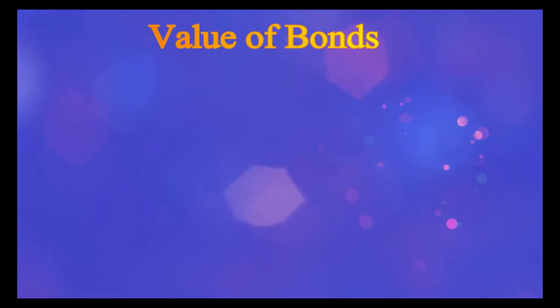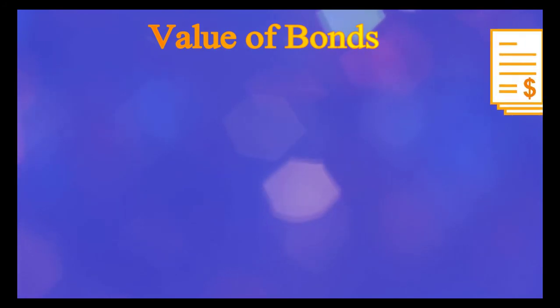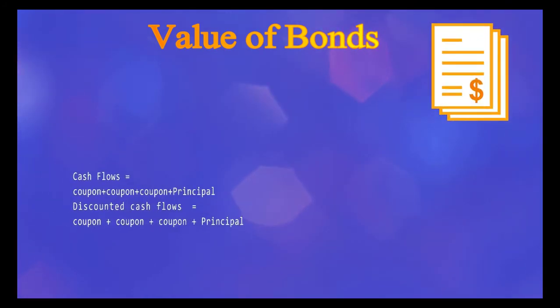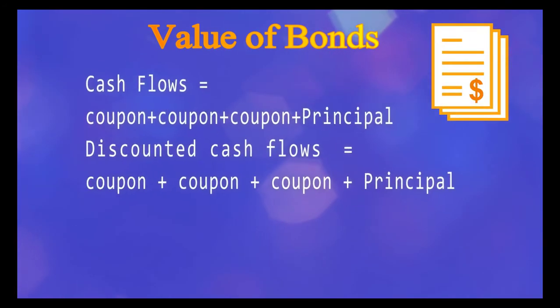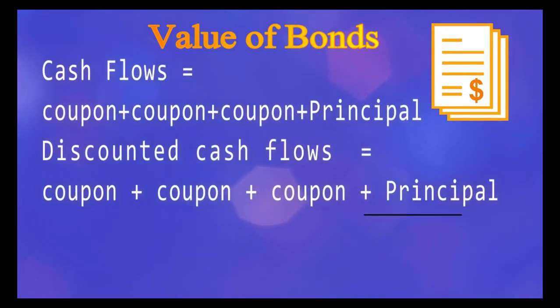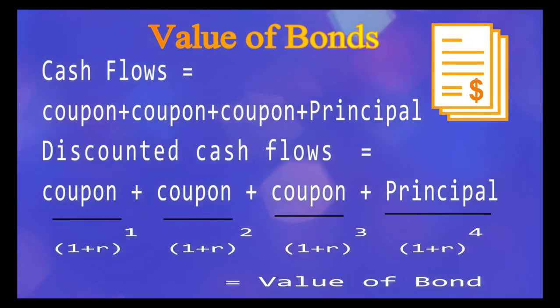Just like valuing a share, discounted cash flows are also used to calculate the price of bonds, for example U.S. Treasury bills. Cash flows associated with T-bills are coupon payments and the repayment of principal amount. By discounting these cash flows at an appropriate discount rate, we can find the value of a bond.